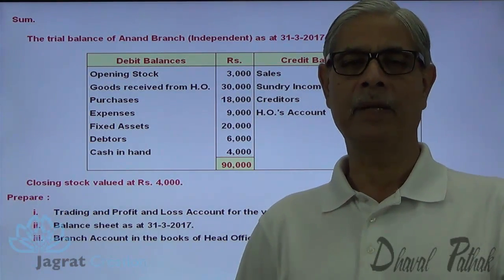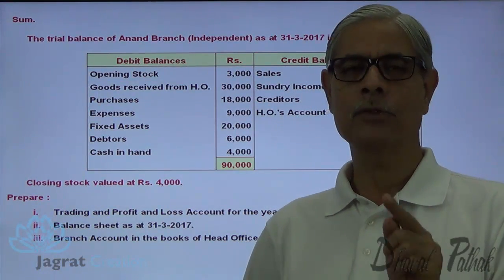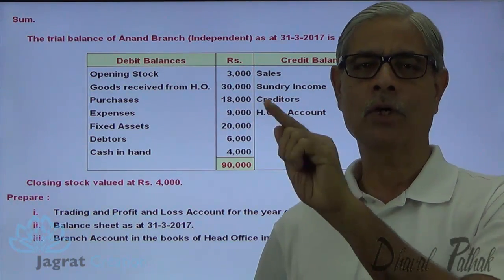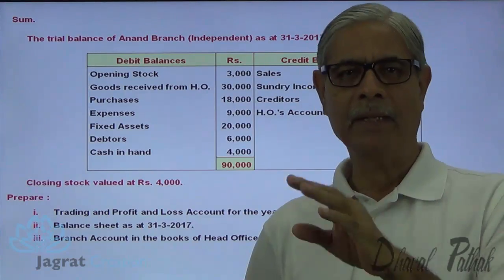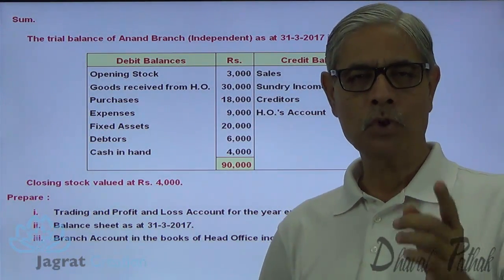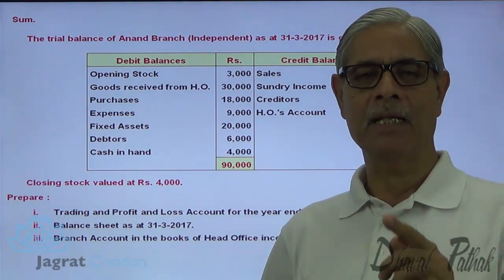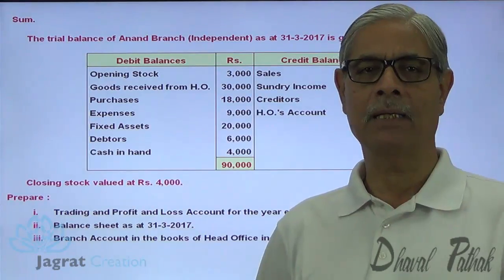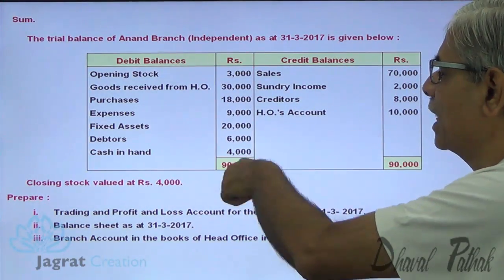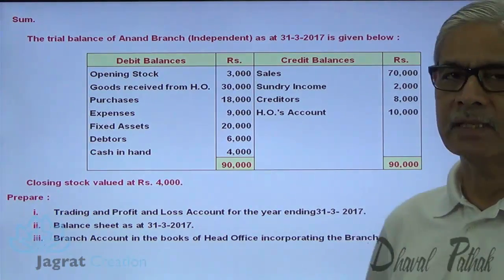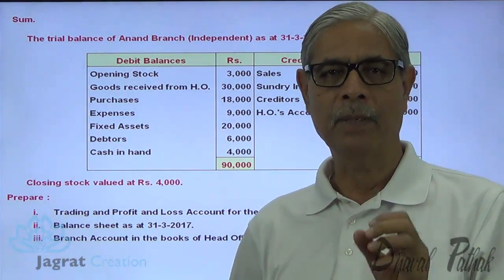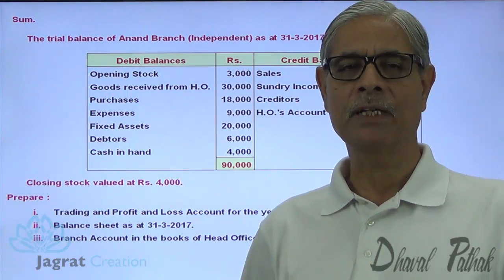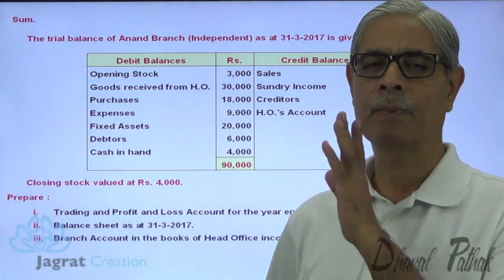What do you mean by independent branch? Independent branch means the branch maintains an independent set of books. Independent set of books means the books of accounts are maintained by the branch in a manner that the branch can prepare its own trial balance. Here the branch trial balance is given and the total of debit and credit is 90,000, which implies that it is an independent branch maintaining its own set of books.